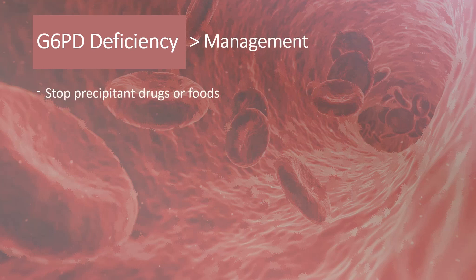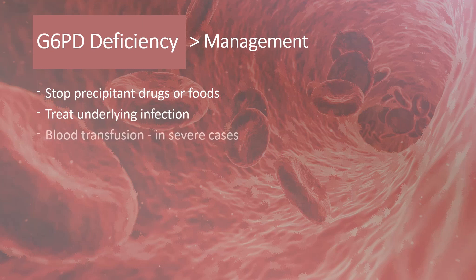The first step in management of a hemolytic crisis due to G6PD deficiency is to stop the offending drugs or foods. Also treat any underlying infection. Blood transfusions will be needed in severe cases.